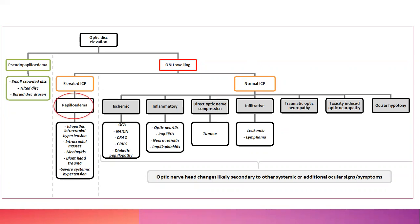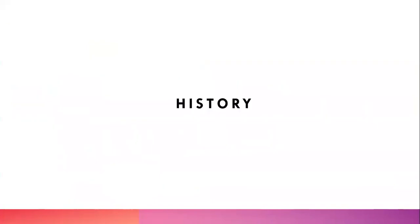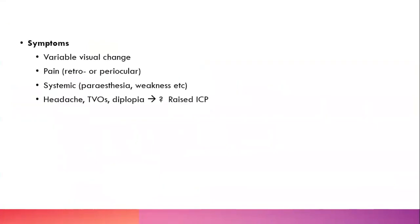In terms of history, the symptoms are variable. You get variable visual change. You can definitely get pain, especially with optic neuritis — either retrobulbar or periocular, often with eye movements. Pain on eye movements is a clue that you've got an optic nerve problem.